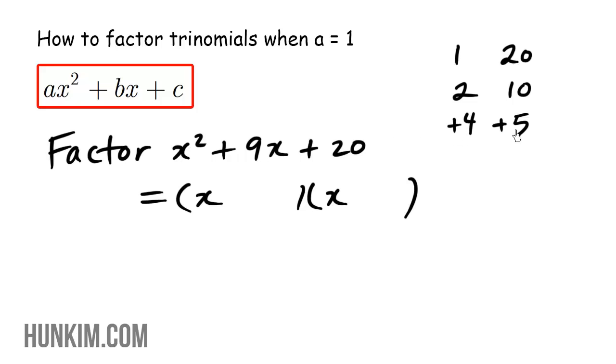In fact, if you think about it, positive four times positive five is positive twenty. And these numbers add to be positive nine. So I'm going to drop these numbers in. Positive four, positive five.